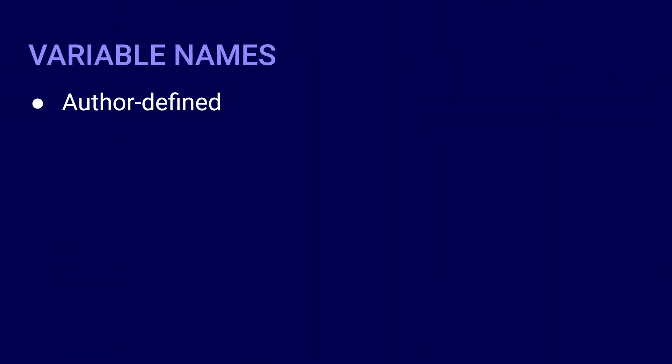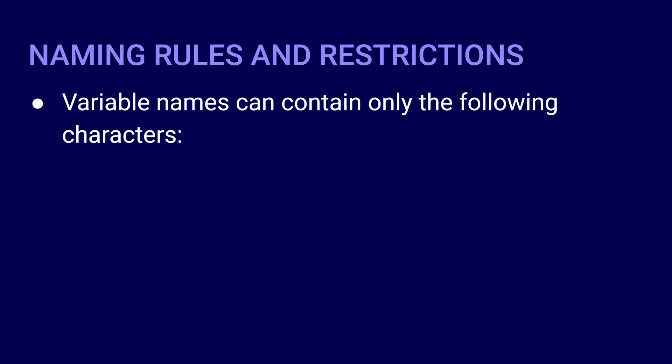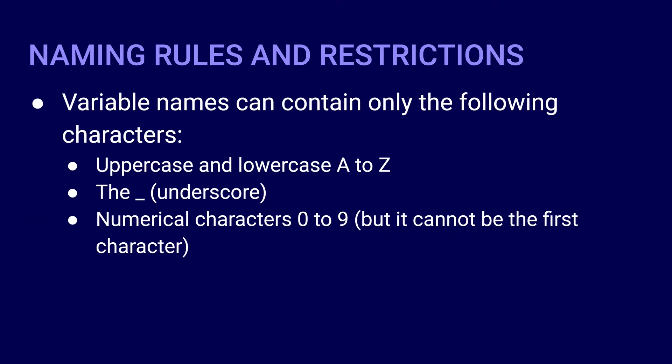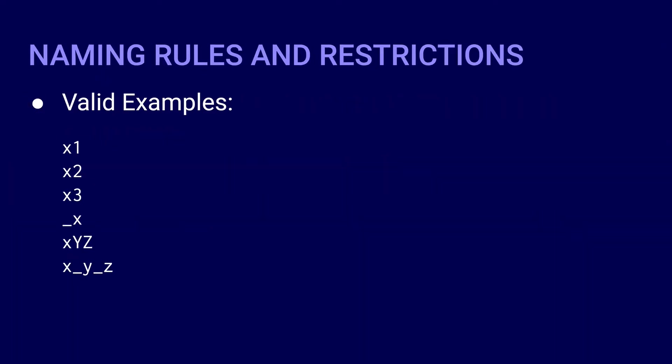Variable names are author defined, meaning that you, as the author of your own program, will be the one to decide what to name your variables. However, there are some rules that need to be followed. In Python, variable names can contain only the following characters: the uppercase and lowercase letters a to z, the underscore, and the numerical characters 0 to 9 — except that they cannot be the first character in a variable name.